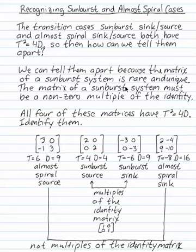You can tell them apart because the matrix of a sunburst system is the rarest. It's a unique matrix. The matrix of a sunburst system must be a multiple of the identity. It must be literally just a number repeated on the main diagonal.